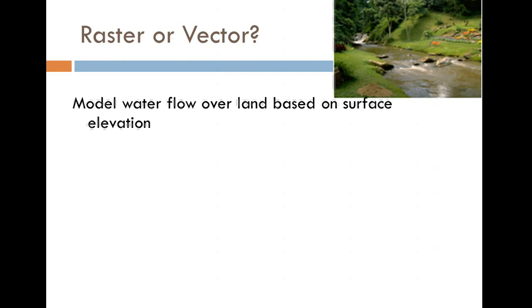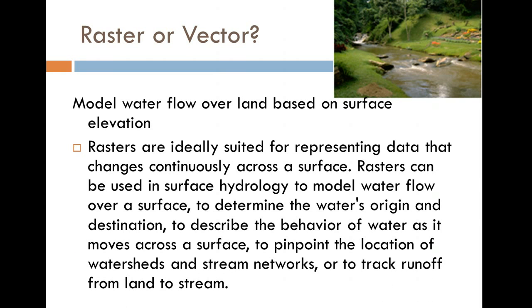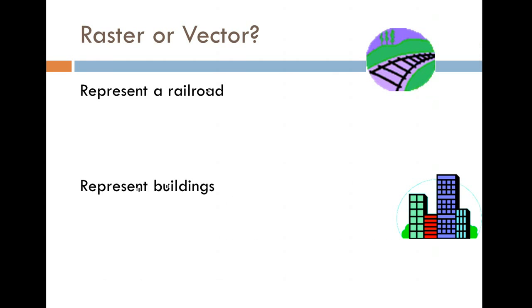Model water flow over land based on surface elevation - raster. This idea of modeling over space using raster data for that is really useful. Jeff took a DEM and converted that into streams as polylines by using the slope, runoff, and drainage. He was able to create streams where maybe there wasn't a stream file for that area. So you can use raster for those kinds of things.